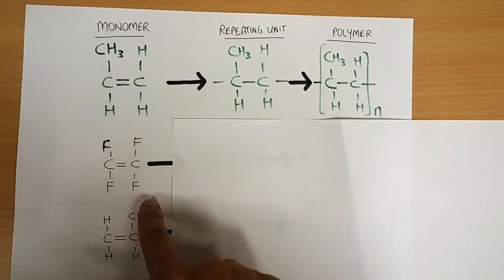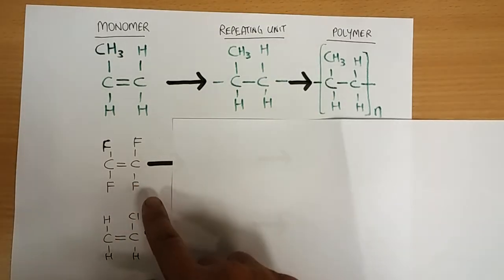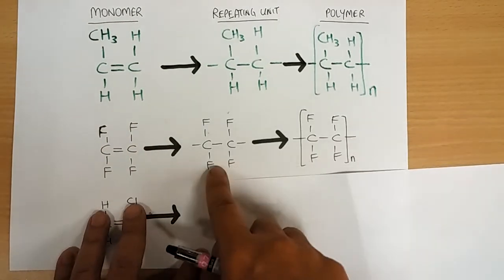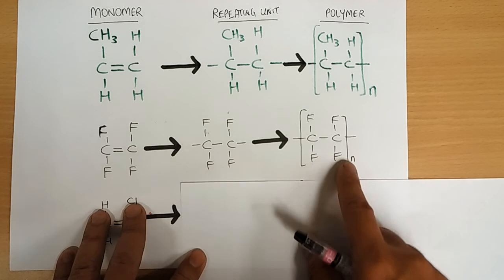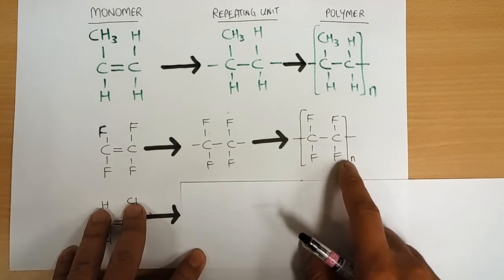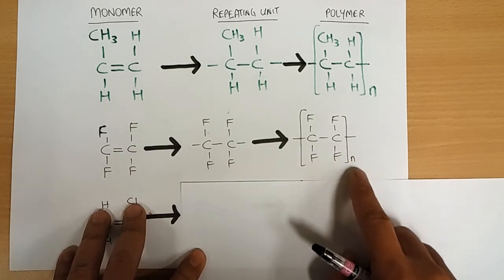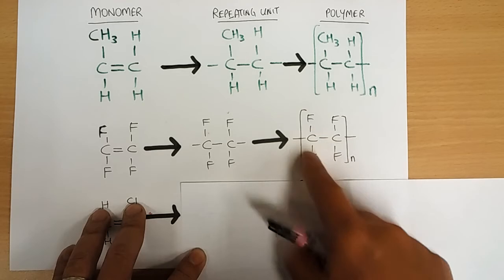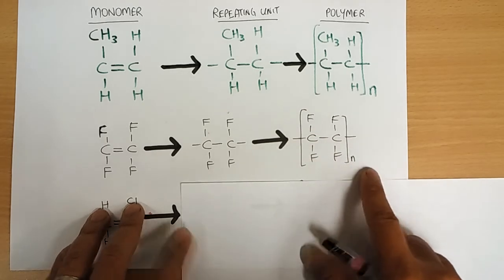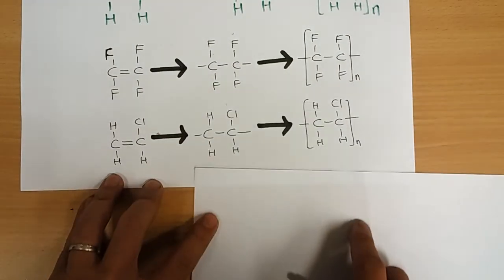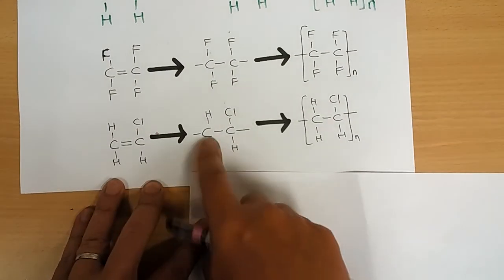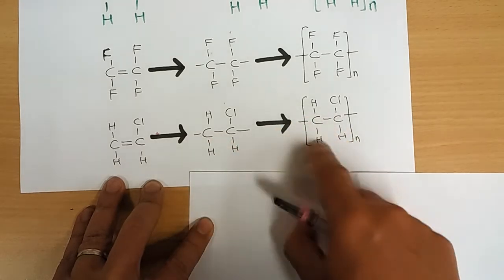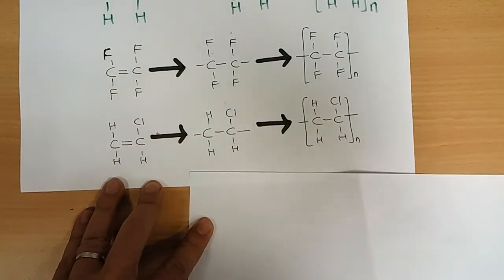In the case of tetrafluoroethene, this is what you get — a repeating unit. And eventually a polymer: polytetrafluoroethene. Here the double bond opens up to a single bond, you put a bracket, and that is your polymer.